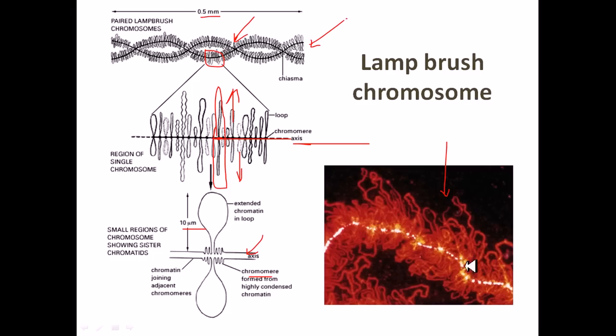This is the axis, stained with highly fluorescent particles. These are the red fluorescent tagging of the loops which are coming out, making a lampbrush chromosome structure.